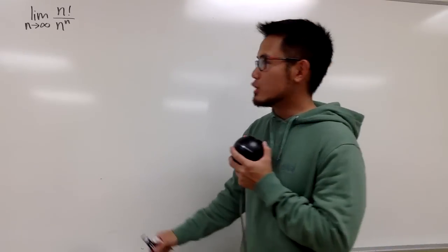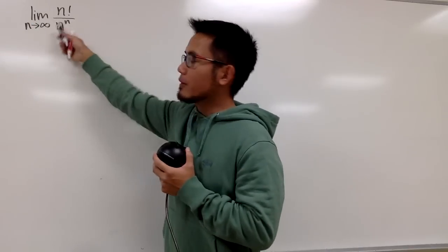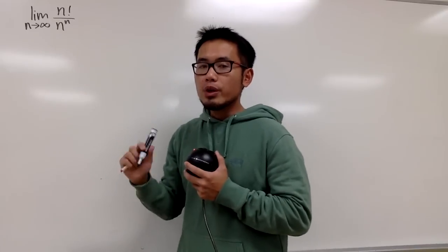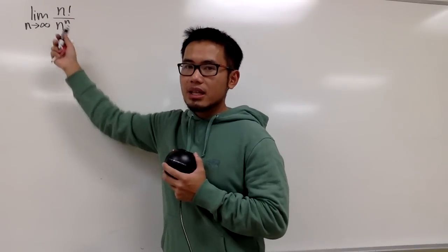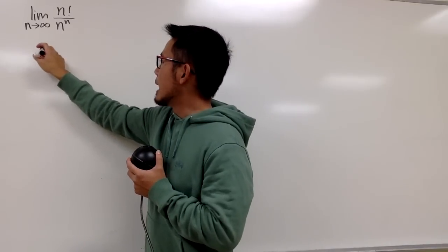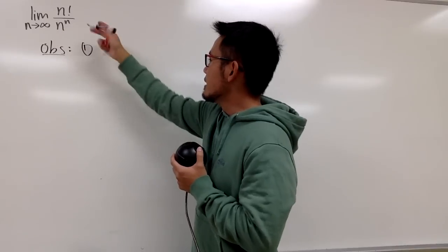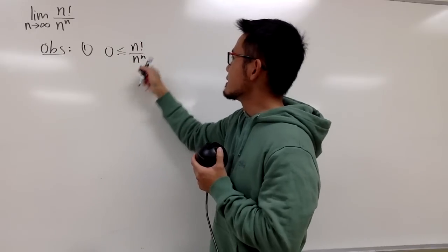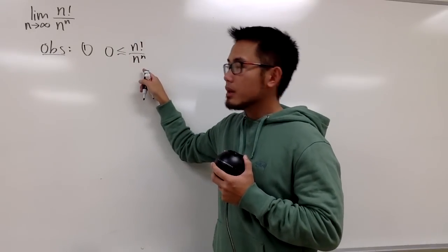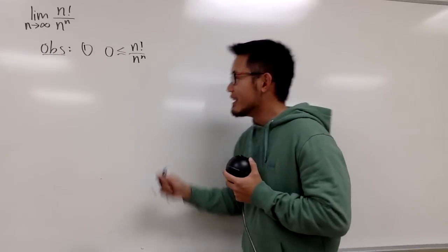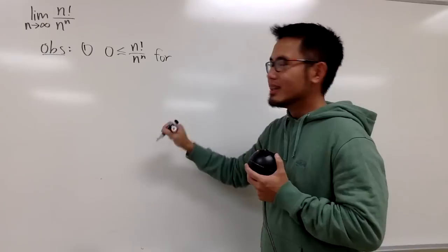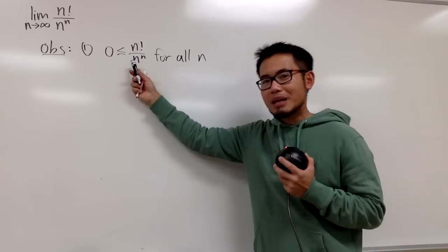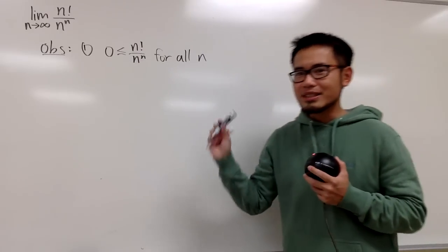In order to use the squeeze theorem, we have to come up with a lower bound and also an upper bound. First observation: n factorial over n to the nth power is always non-negative, so we have 0 ≤ n!/n^n. This is true for all n. To make this even more rigorous you would use mathematical induction, but this is our lower bound.